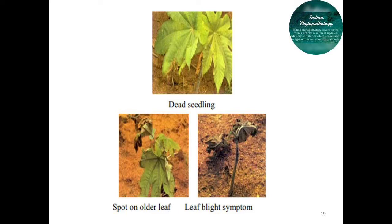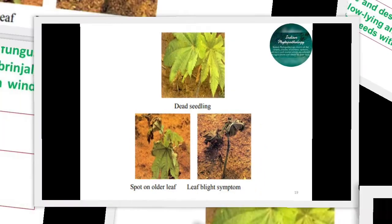You can see in the image there is a leaf blight symptom showing that seedlings were completely died due to the infection of this pathogen. On older leaves, infection is showing dull green patches developed on those leaves.